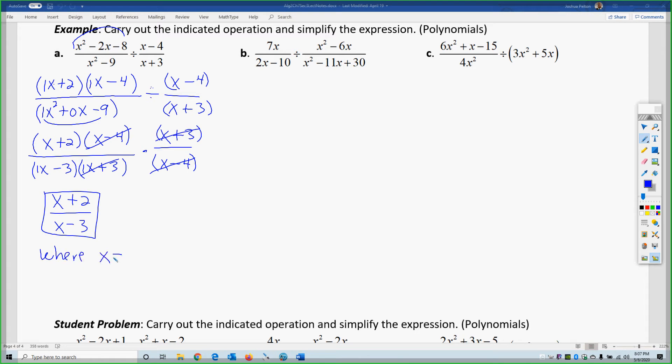Where x cannot equal, okay, well, if I look at it, what do I really have? I have 3, negative 3, and 4. So why is that? This one, this one, and this one are the denominators, okay? Because the reality is, it's division, all right?